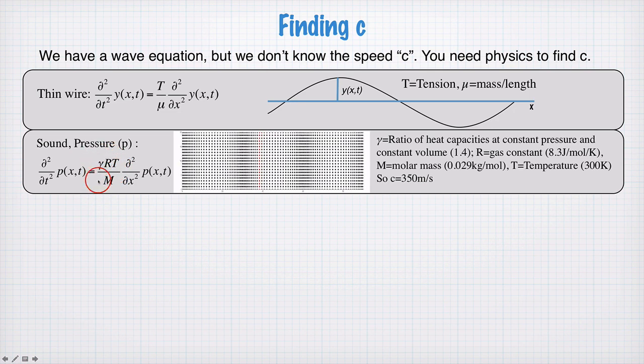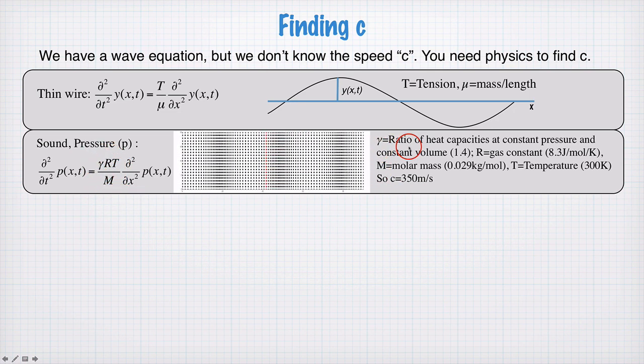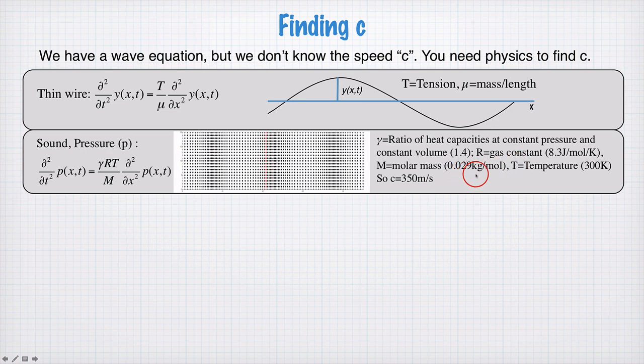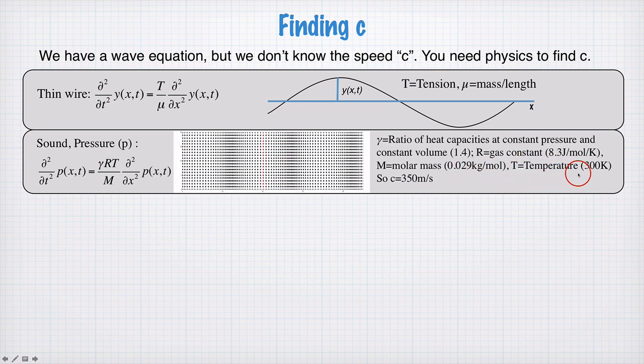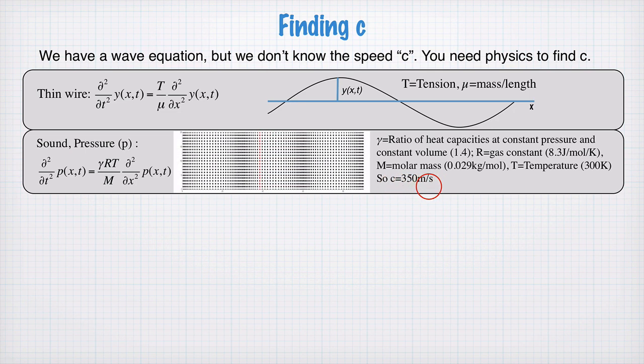c squared is given by this term here, and when we look at what those different things are, we have gamma as the ratio of heat capacities at constant pressure and constant volume which is 1.4, R is the gas constant, M is the molar mass, and T is the temperature. At room temperature 300 Kelvin, we find for air a speed of sound of about 350 m per second, which is also what we observe.